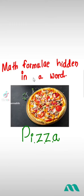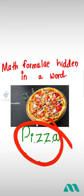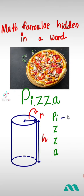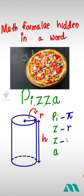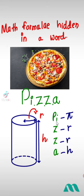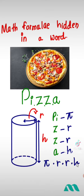Let's identify a math formula hidden in a word. If we consider the word PISA, where P stands for the symbol pi, S stands for R, and A stands for H, then the expression hidden within PISA is pi times R times R times H.